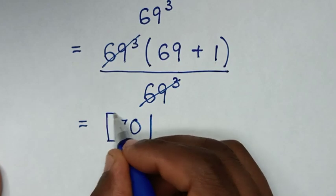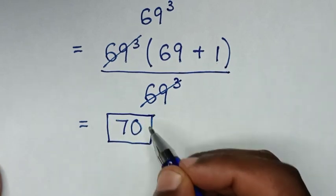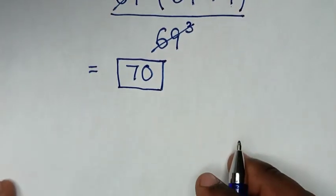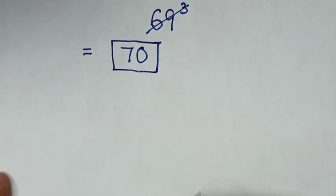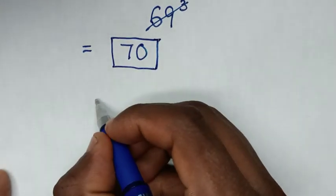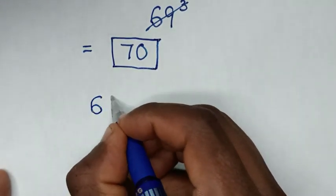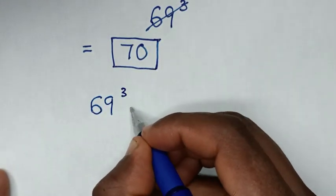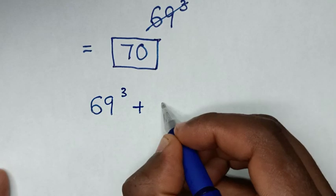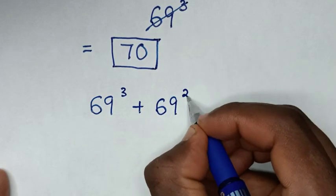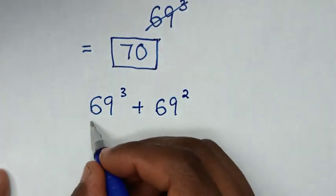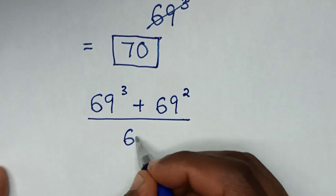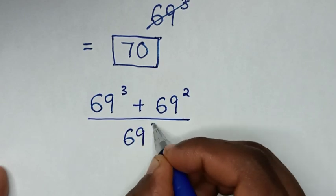Let's try another problem of the same kind: 69 power 3 plus 69 power 2, over 69 power 2.